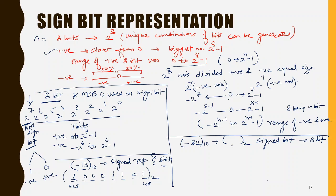If it is an 8-bit system, you have to convert the answer into 8 bits; if it is a 16-bit system, you have to convert it into 16-bit binary. For 8-bit binary, I will place these 8 bit positions, and since it is a negative number, I will use 1 as the sign bit.